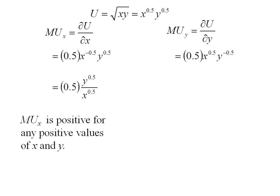We can look at our problem and see that the derivative of utility with respect to y is symmetric. It's going to look like it does for the marginal utility of x, giving us 0.5 x to the 0.5 y to the negative 0.5. So marginal utility of y is also positive for any positive values of x and y.